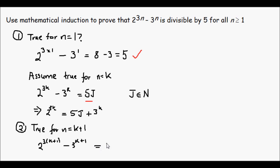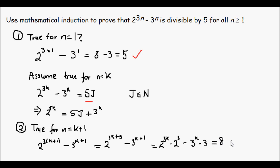That can be written as 2 to the 3k plus 3, expanding and distributing. And if I use my index laws to simplify, I'll get 2 to the 3k times 2 to the 3, minus 3 to the k times 3, which is equal to 8 times 2 to the 3k minus 3 times 3 to the k.